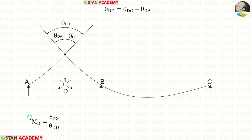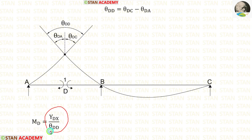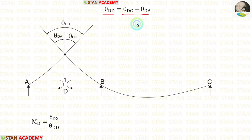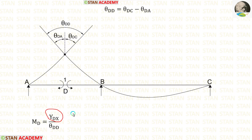Now let us see the formula. To calculate the bending moment at point D, MD, the formula is YDX upon theta DD. To calculate theta DD, the formula is theta DC minus theta DA. To calculate YDX, we have to make sections in the beam. We have two parts: AD1 and D2C.